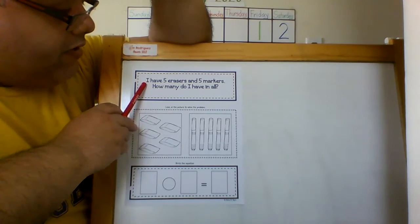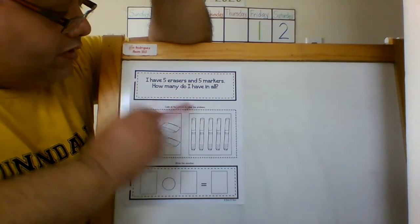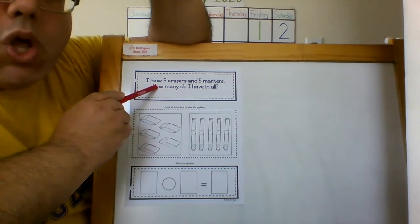It says I have five erasers and I have five markers. How many do I have in all?